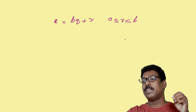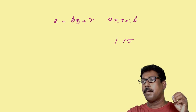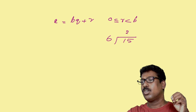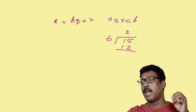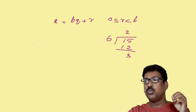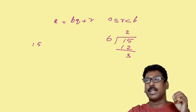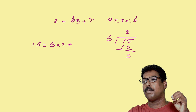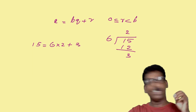And there is a condition for r: 0 less than or equal to r less than b. For example, if you are dividing 50 by 6, 6 twos are 12 and the balance is 3. That means 50 can be written as 6 into 2 plus 3.